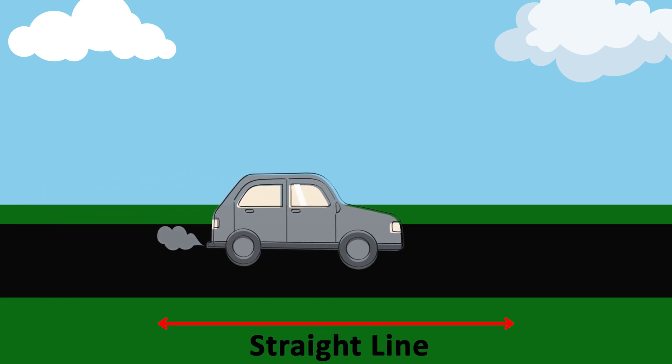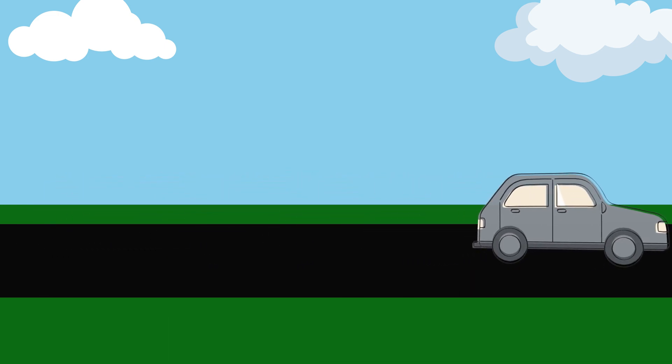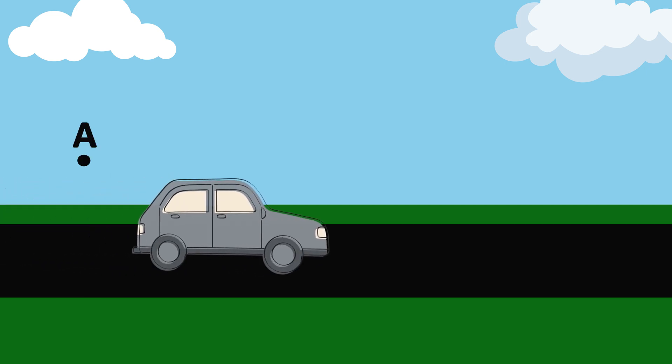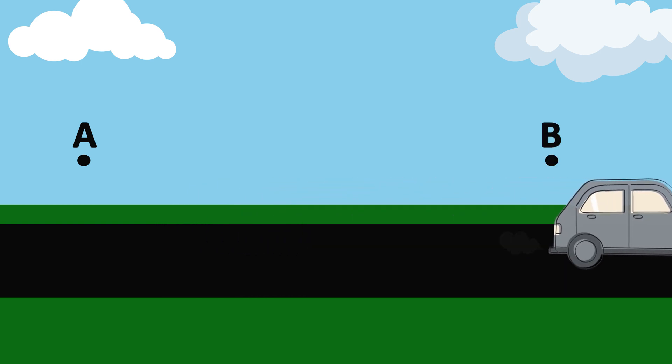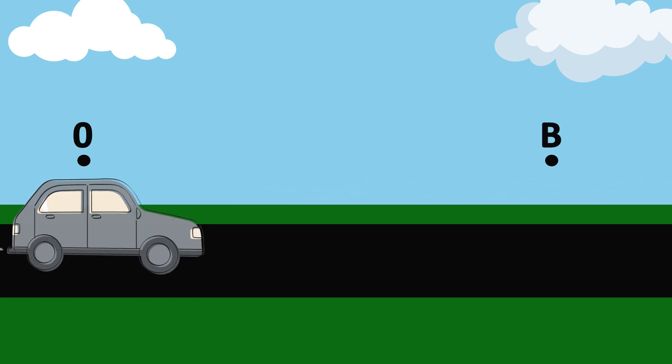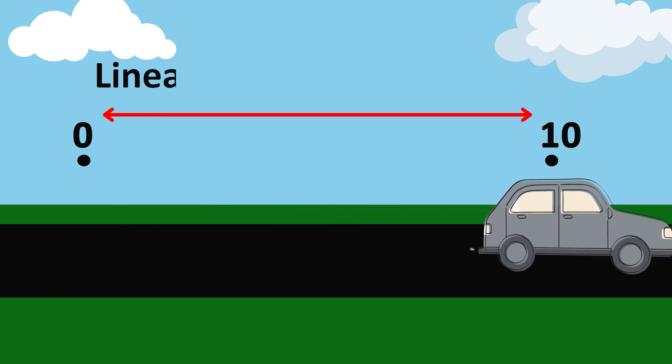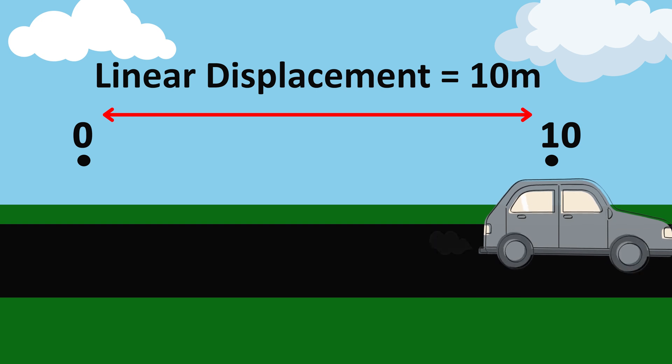Let's consider a practical example of linear displacement. Consider a car moving in a straight line. The linear displacement of the car is defined as the distance traveled from its starting position to its current position. For example, if the car starts from position 0 and moves to position 10 meters down the road, then its linear displacement would be 10 meters.